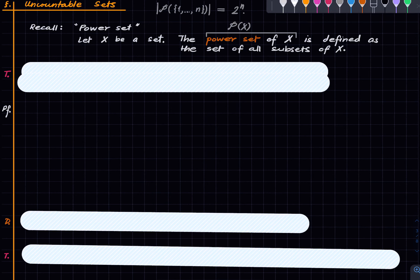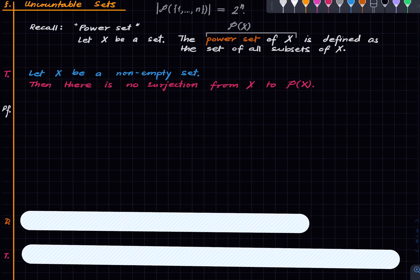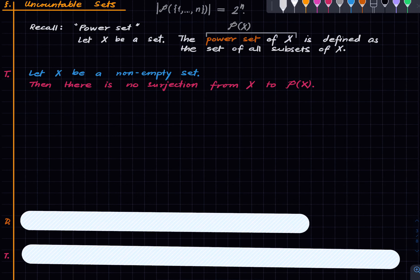Here is our very interesting theorem: if we have a non-empty set X, then there is no surjection from X to the power set of X. There is no surjection from X to P(X). The proof we are going to give is, as far as I know, due to Cantor. We will proceed by contradiction.